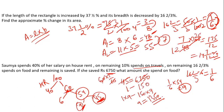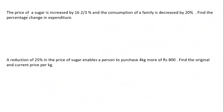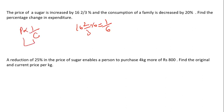Let's move to the next question. The price of sugar is increased by 16⅔ percent (which is 1/6), and the consumption of a family decreased by 20 percent. You must know that price is inversely proportional to consumption — if price is increasing, consumption will be reducing. You have to determine the percentage change in expenditure.